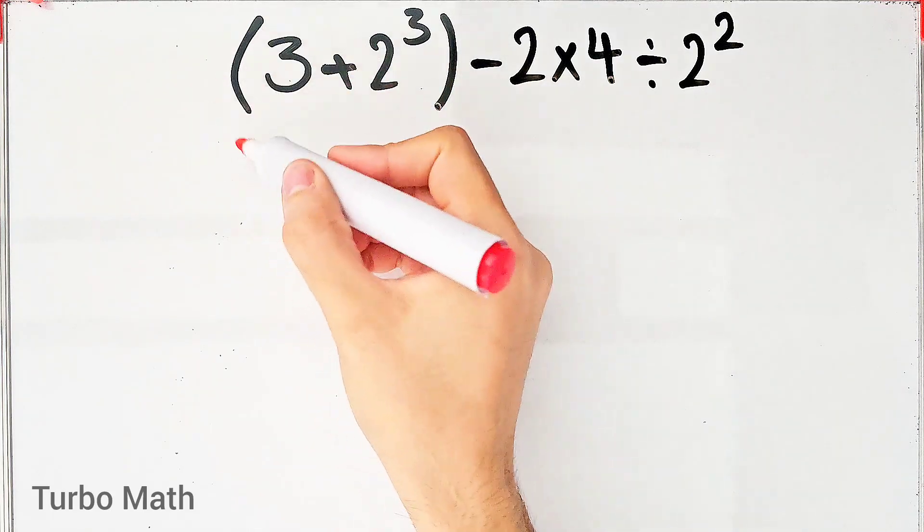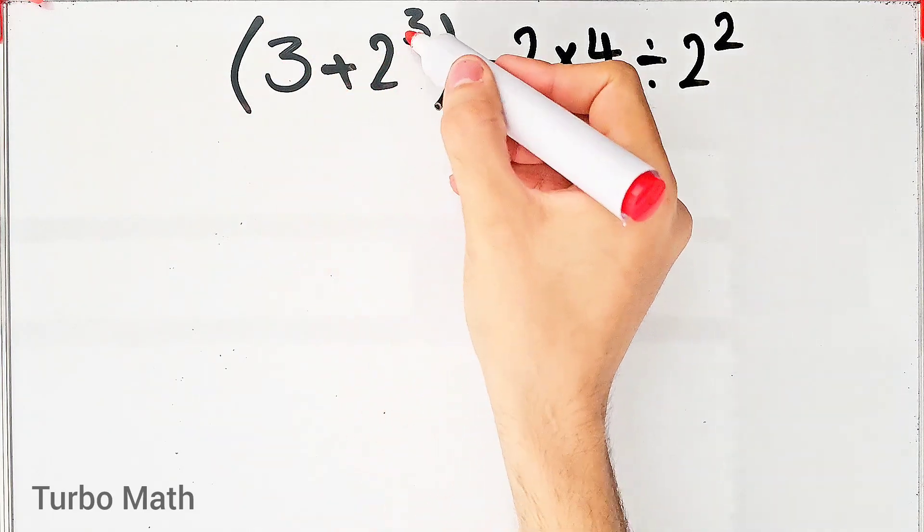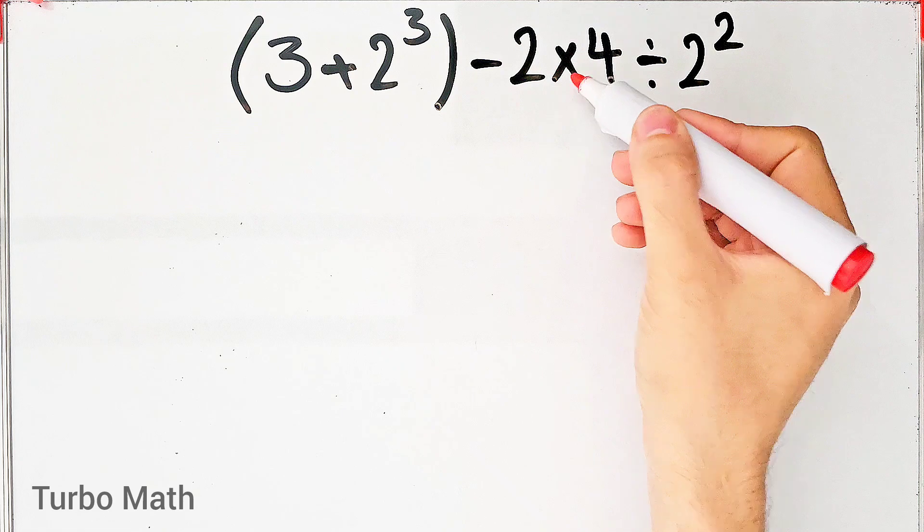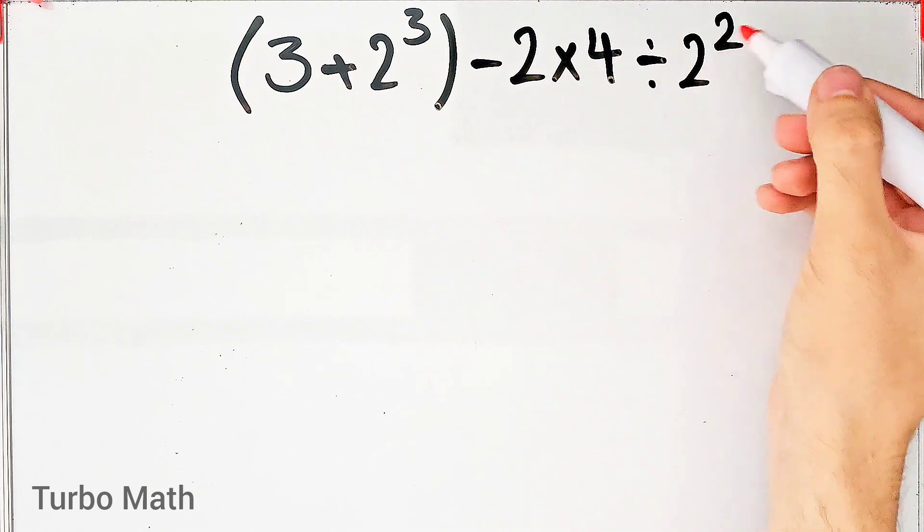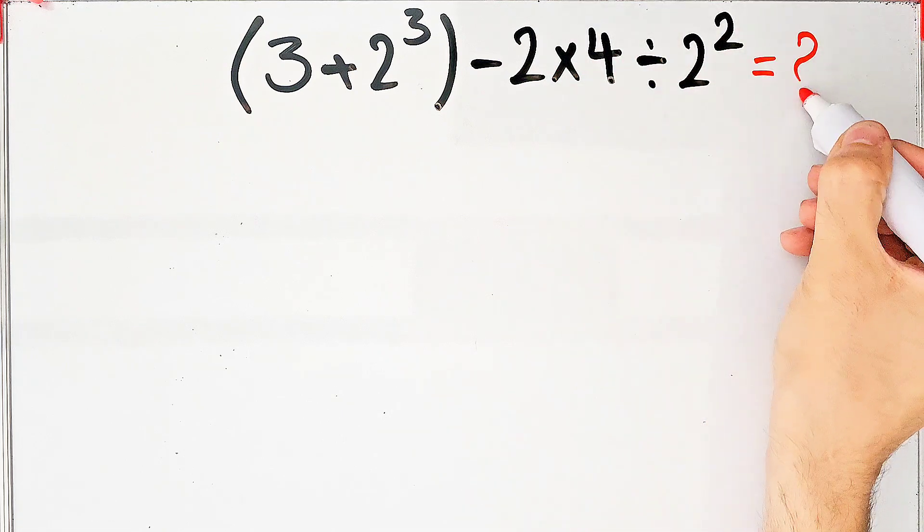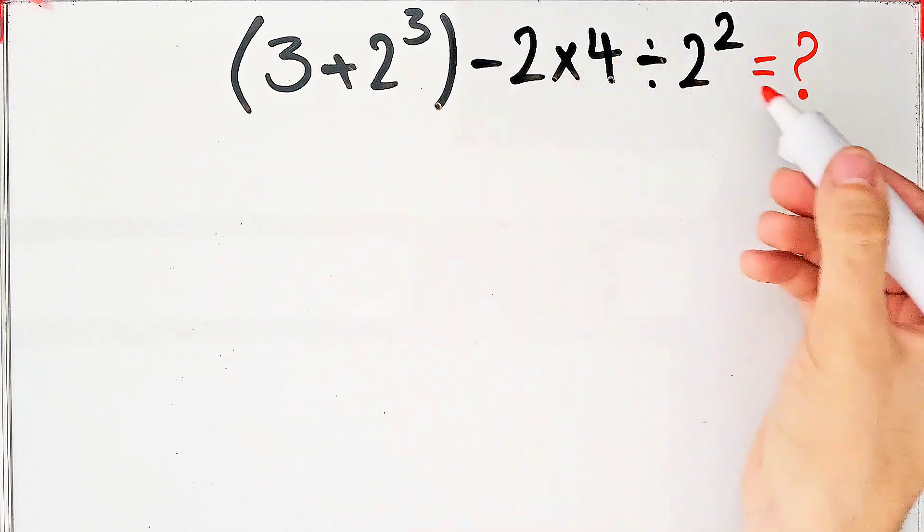Open parentheses 3 plus 2 to the power of 3 close parentheses minus 2 times 4 then divided by 2 to the power of 2. What is the answer of this question? Can you solve it? Hi friends and welcome to Turbo Math channel.